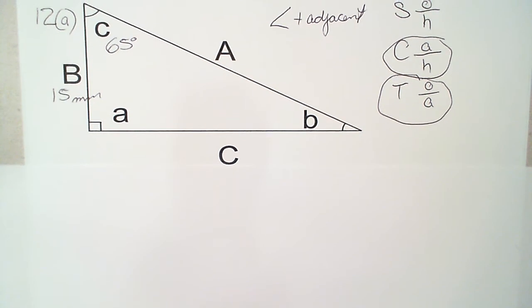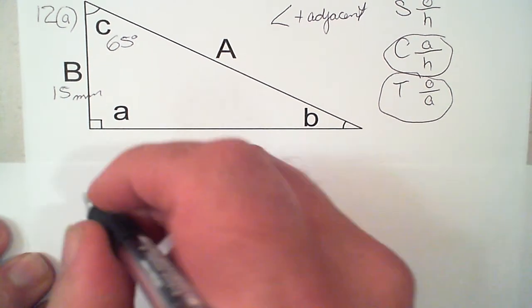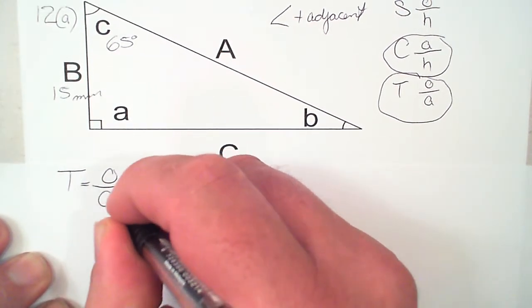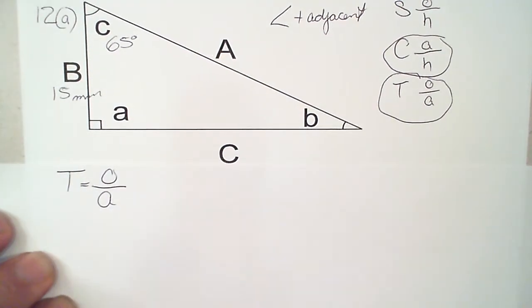Let's write our formula down. So, T equals the opposite over the adjacent. Therefore,